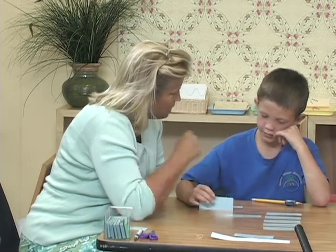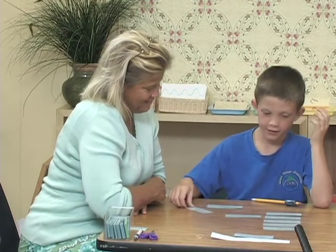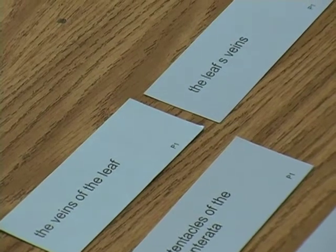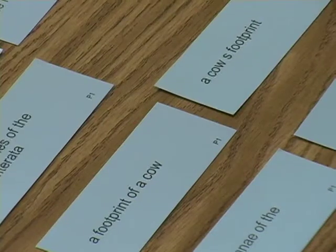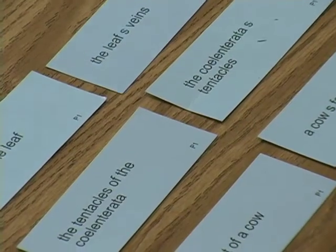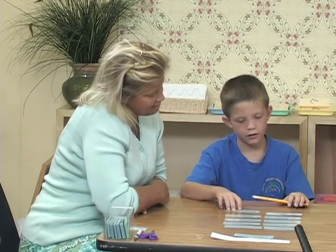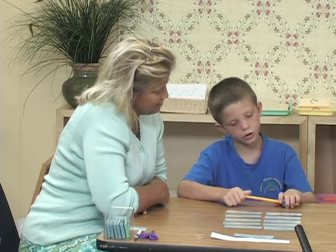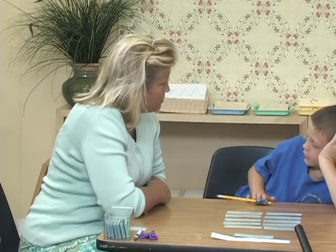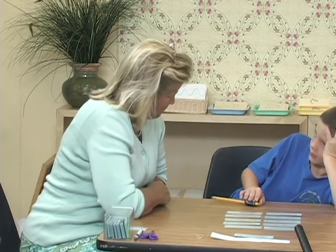What's missing here that you would need to put in? An apostrophe S. Read both phrases: the veins of a leaf — the leaf's veins. A footprint of a cow — a cow's footprint. The tentacles of the Cylinderata — the Cylinderata's tentacles. The triangles of the geometry cabinet — the geometry cabinet's triangles. Very nice. So when you write this in your language book, you're going to add the apostrophe S each time.